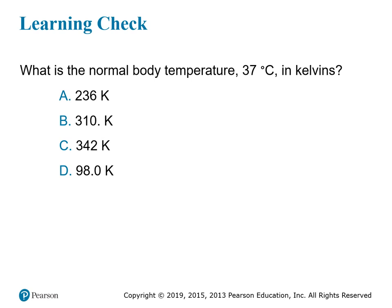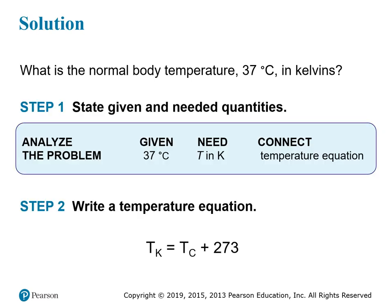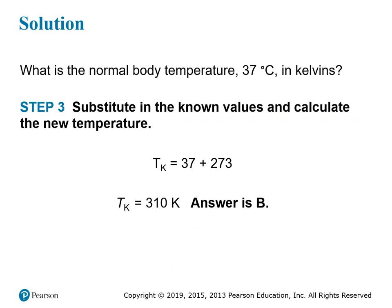This question involves converting Celsius to Kelvin, which is an easier conversion. What is the normal body temperature of 37 degrees Celsius in Kelvin? We're given the Celsius temperature and need Kelvin. The equation is simply: Kelvin equals Celsius plus 273. So 37 plus 273 gives an answer of 310 Kelvin.